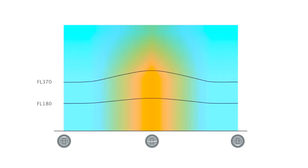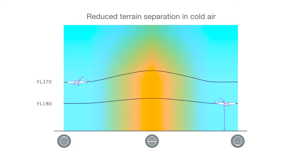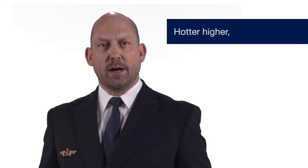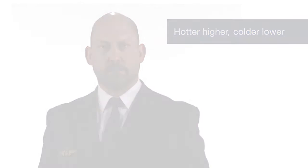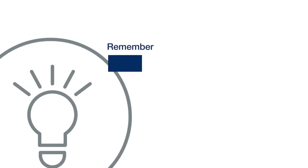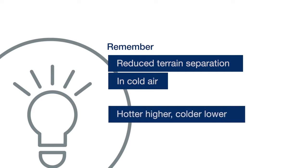Why is Mars losing its atmosphere? The atmosphere of Mars has been losing mass into space throughout history, and the leakage continues today. The atmosphere of Mars is cooler than Earth's due to its greater distance from the sun. Mars receives less solar energy and has a lower effective temperature.